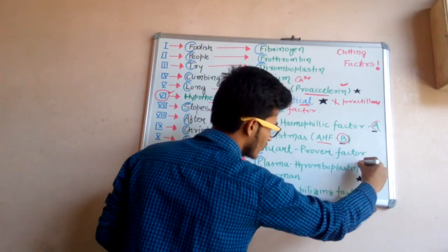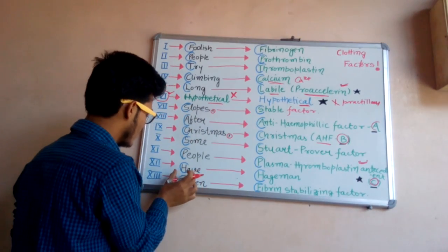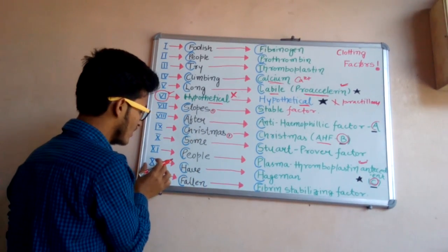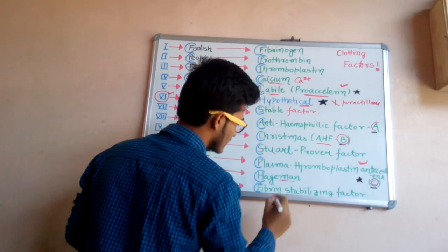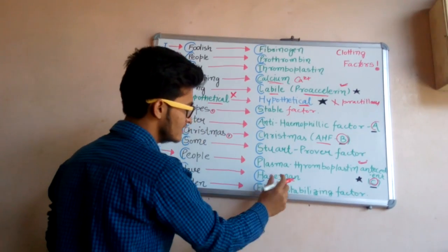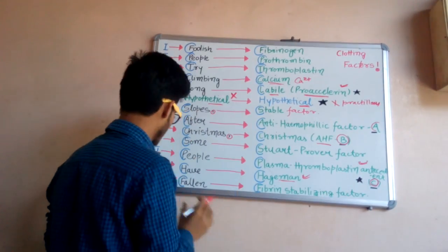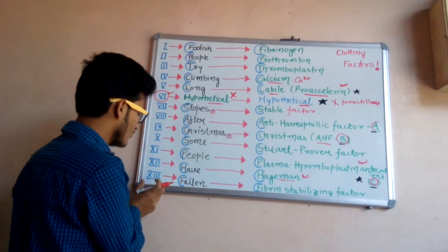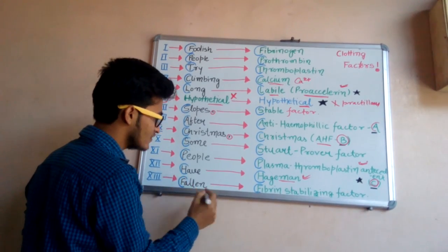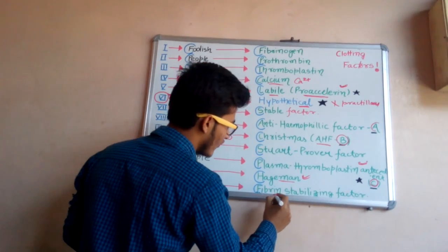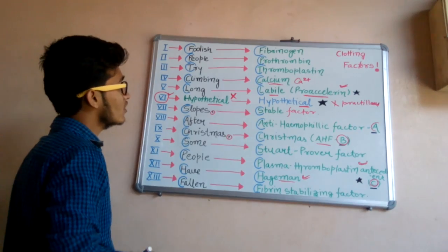'H' in 'have' is number twelve — H means Hageman's factor (H-A-G-E-M-A-N). And number thirteen: 'F' in 'fallen' simply means fibrin stabilizing factor.